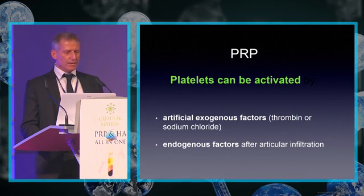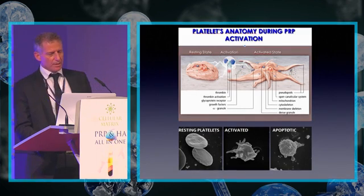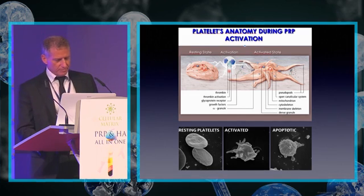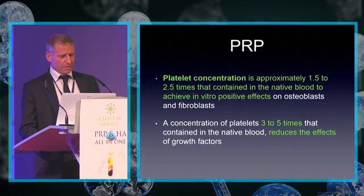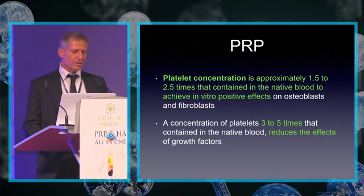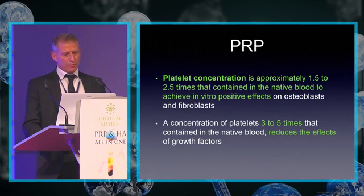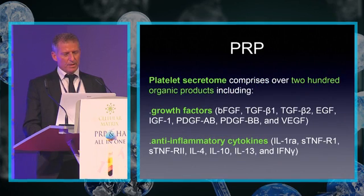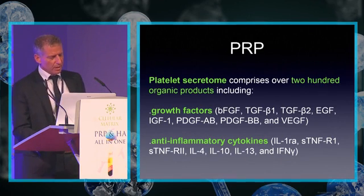Platelets can be activated by exogenous factors or by endogenous factors after articular infiltration. On this slide, you can see platelet anatomy during PRP activation. Platelet concentration of approximately 1.5 to 2.5 times that contained in native blood achieves positive in vitro effects on osteoblasts and fibroblasts. A concentration of 3 to 5 times native blood levels reduces the effects of growth factors. Platelet secretome comprises over 200 organic products, including growth factors and anti-inflammatory cytokines.